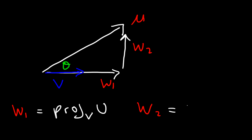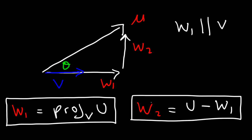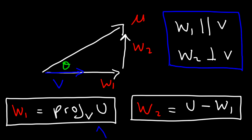W2 is the component of vector u that is orthogonal to vector v, and the way we calculate it is vector u minus the component w1. So w1 is the component of vector u that is parallel to vector v, and w2 is the component of vector u that is perpendicular or orthogonal to vector v. Using these two formulas, that's how we can find a component parallel to another vector and a component perpendicular to another vector.